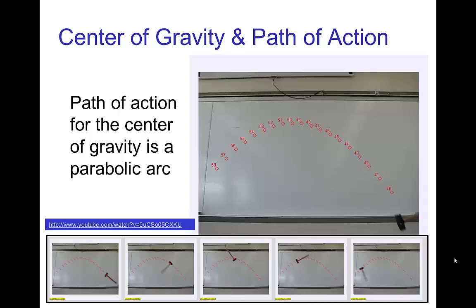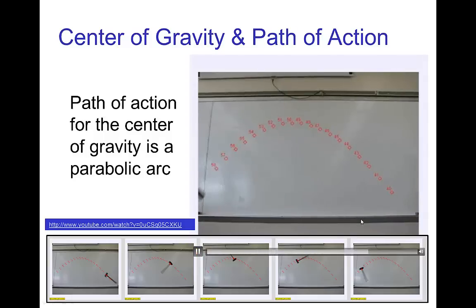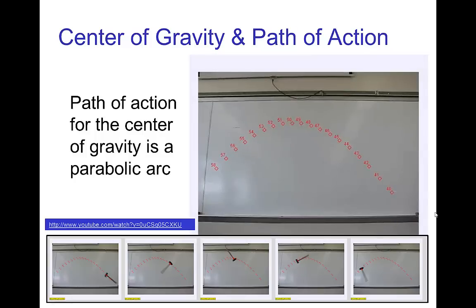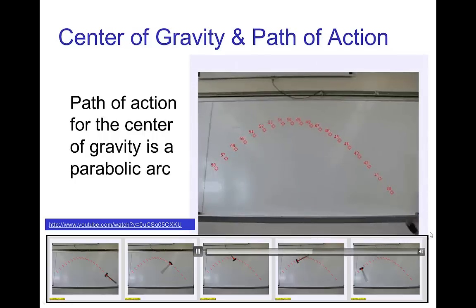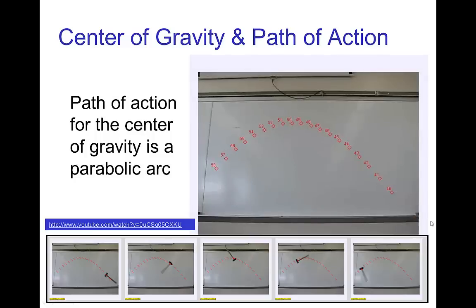Now, one of the things which is fundamental in a successful jump is having a good path of action. And for something like an inanimate object like this hammer, we know that the path of action for the center of gravity is a parabolic arc. So we see that in these frames of the hammer as it's flying through the air.